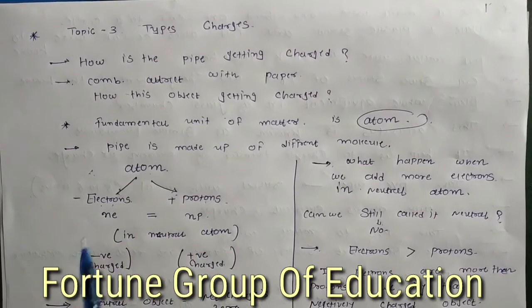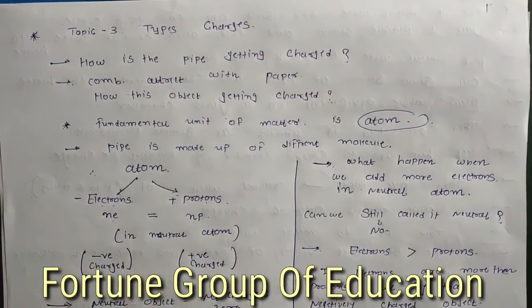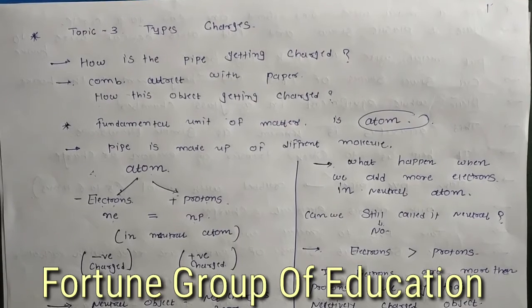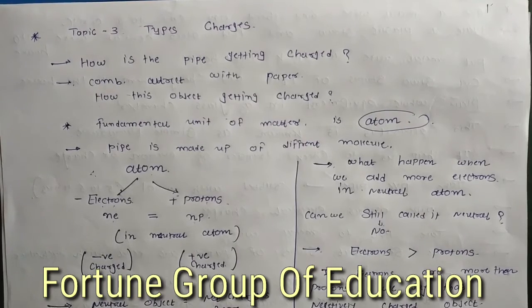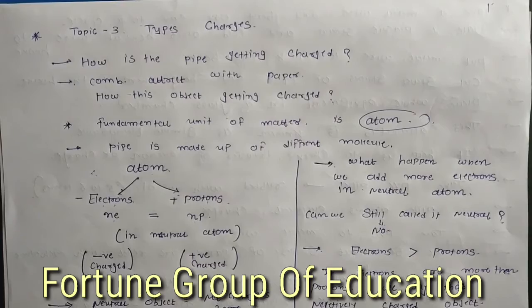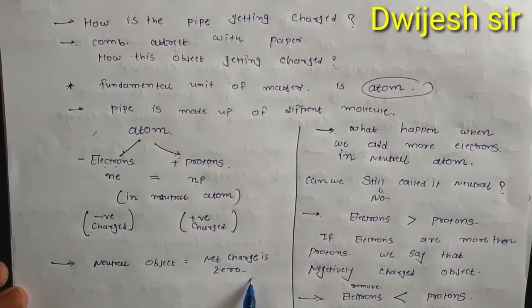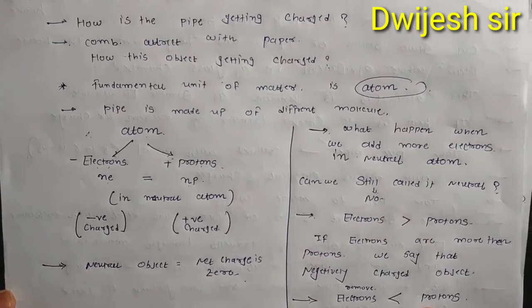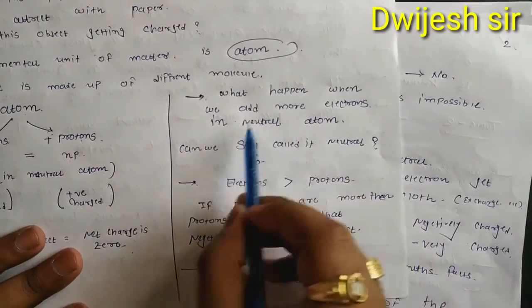The atoms have electrons and protons. The number of electrons and the number of protons in a neutral atom are the same. We know that electrons are negatively charged and protons are positively charged. In a neutral object, the net charge is zero.